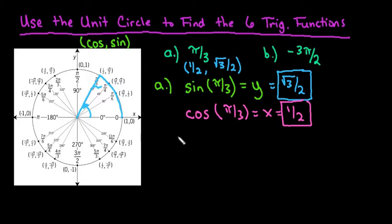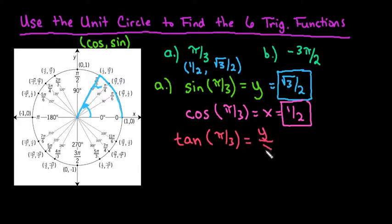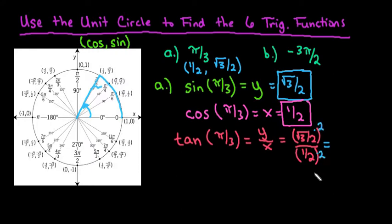Remember that tangent is always y over x, or sine over cosine. So when we set this up we can either think of it as y over x or sine over cosine. We're going to take square root 3 over 2 divided by 1/2, and simplify this fraction because we don't want to leave it as a complex fraction. Multiplying numerator and denominator by 2 — essentially multiplying by 1 — we're just left with the square root of 3.